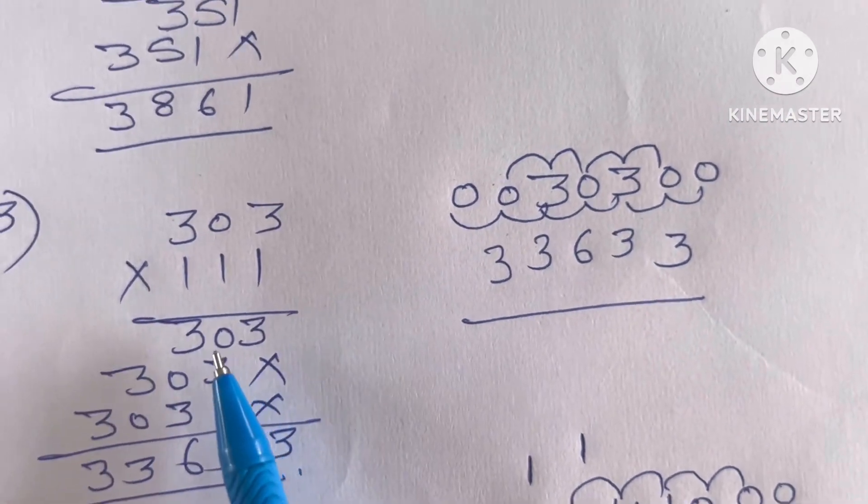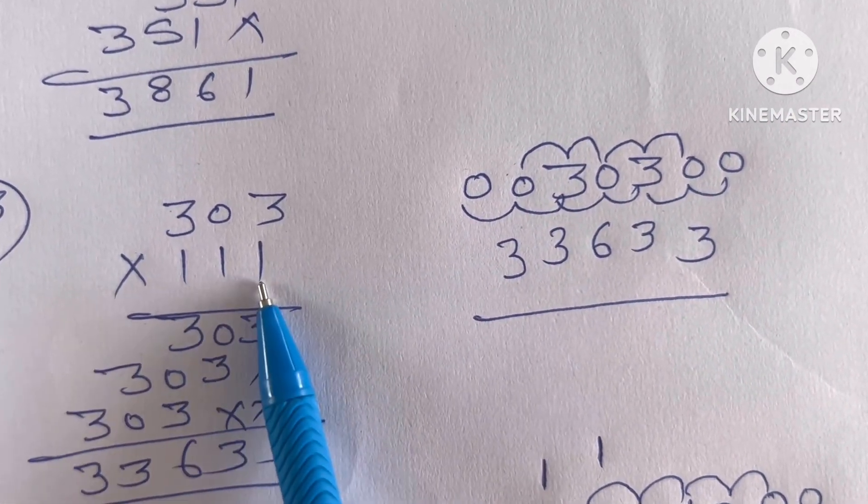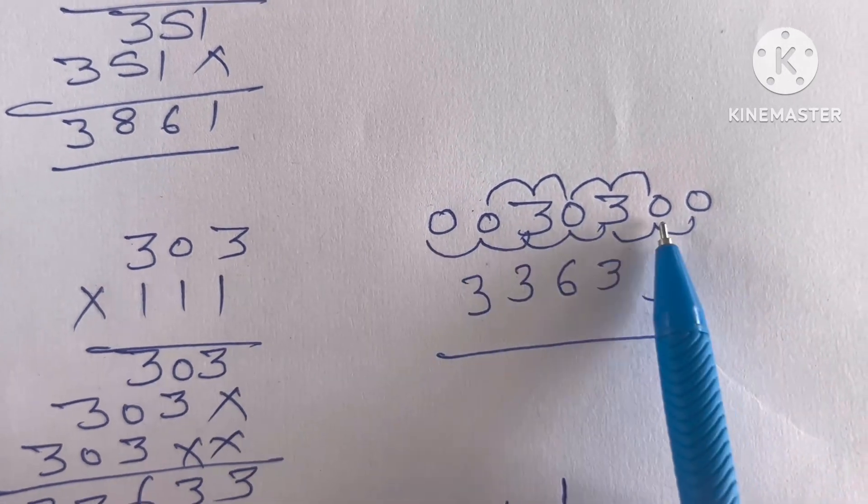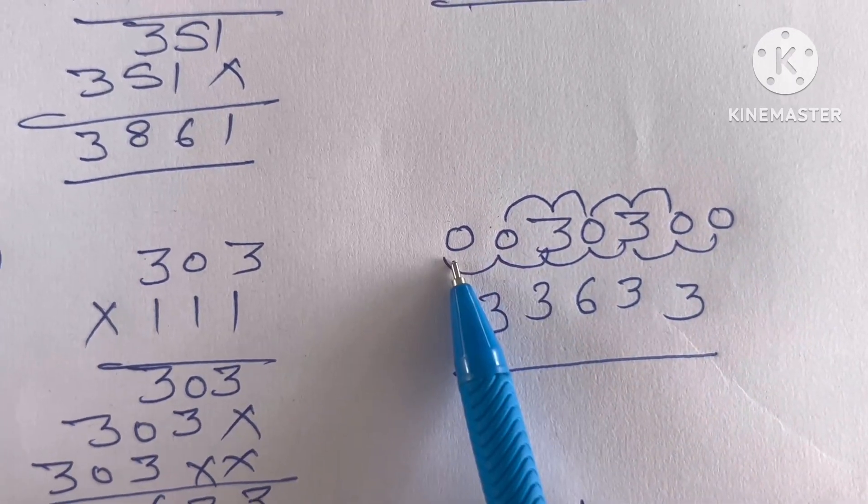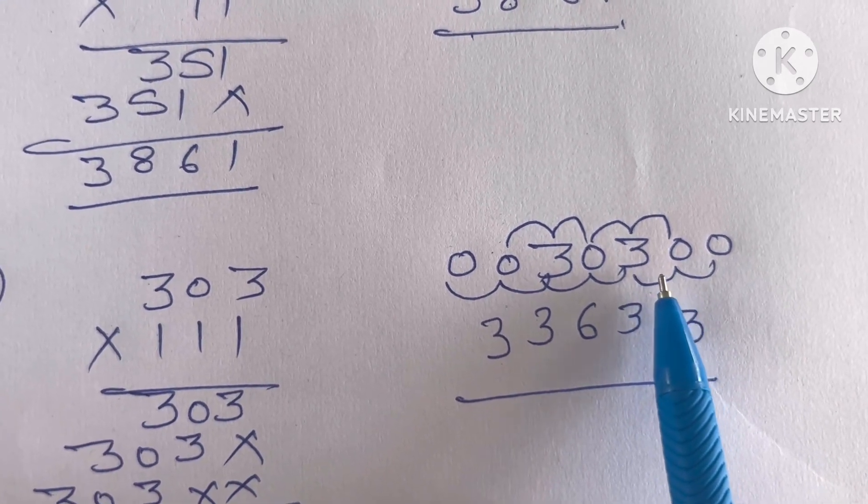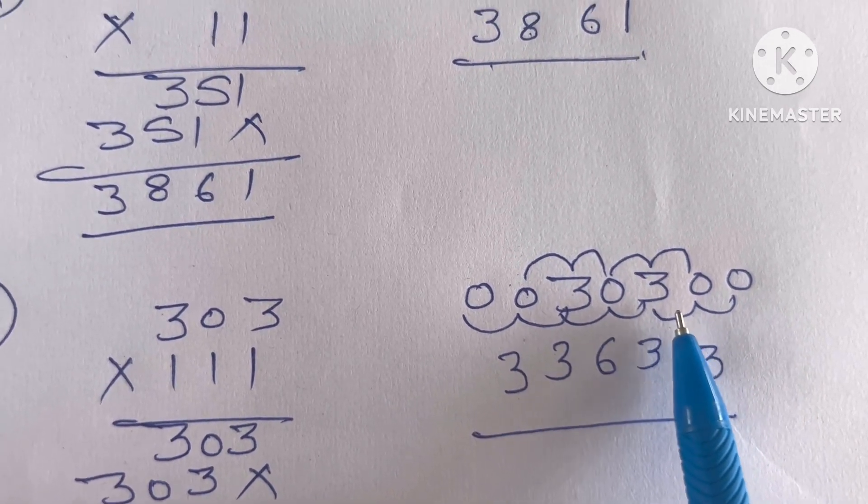Now, if you want to multiply by 111, then you have to put two zeros on both sides. Two zeros this side and two zeros this side. In this case, you have to add three numbers.